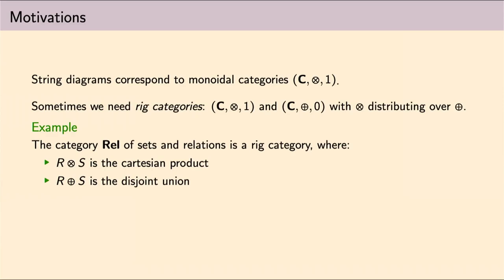And an example of rig categories, which is going to be our leading example, is that of sets and relations. So Rel has two monoidal products. One is the Cartesian product, and the other one is the disjoint union of relations. As we will see in the next few slides, these two monoidal products are at the core of the calculus of relations.